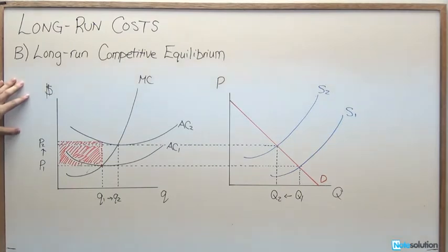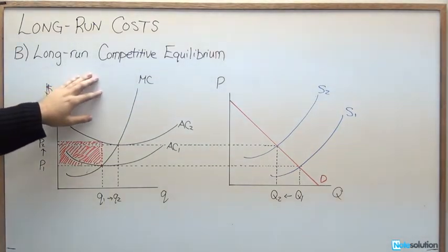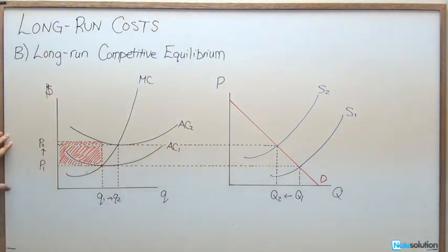Now we're going to see how a change in fixed costs will affect the long-run competitive equilibrium. Again, this is an extension of the Yo-Yo's example you saw before, where the fixed costs had increased. So what exactly happened there?